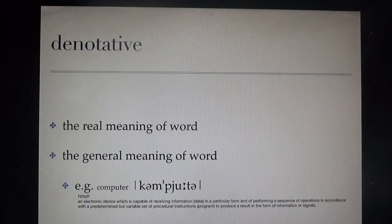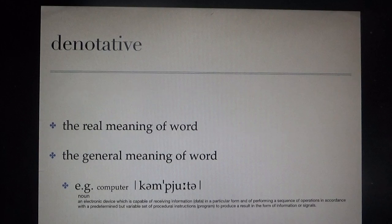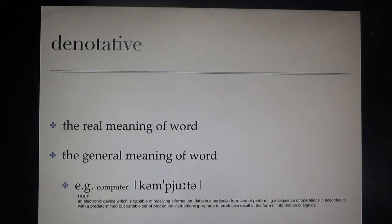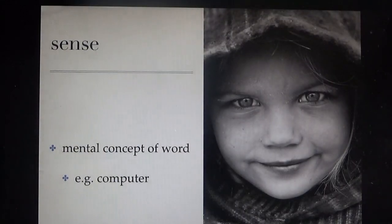The first thing is the denotative. The denotative, as we have known, is the real meaning of a word — the general meaning of a word — and you can find it from the dictionary. For example, the computer: the definition is an electronic device which is capable of receiving information. So you can find it from the dictionary and understand what a computer is.